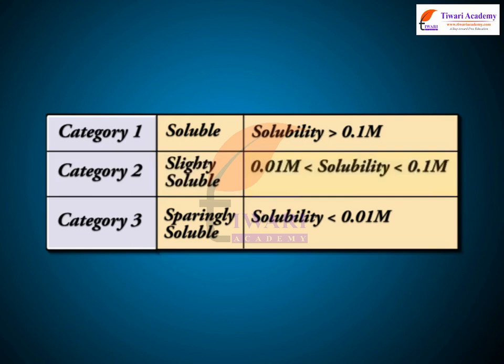We have solid barium sulfate in contact with its saturated aqueous solution. The equilibrium between the undissolved solid and the ions in a saturated solution can be represented by the equation: BaSO₄ (solid) ⇌ Ba²⁺ (aqueous) + SO₄²⁻ (aqueous).